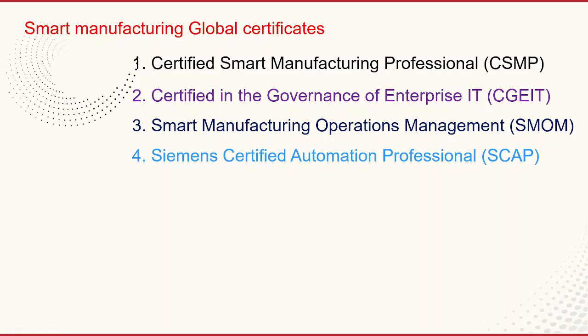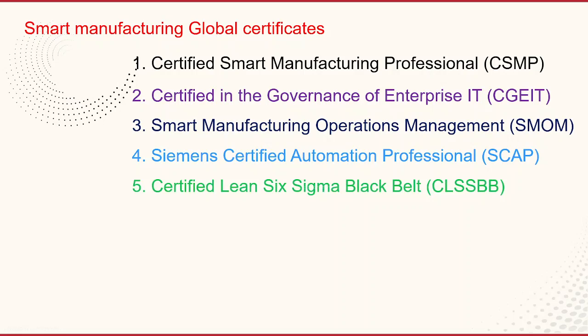The fourth certificate is the Certified Automation Professional (CAP), offered by SIEMENS, which covers the use of automation products in a manufacturing environment, including control systems, human-machine interface (HMI) design, and networking. The fifth certificate is the Certified Lean Six Sigma Black Belt (CLSSBB), offered by the American Society for Quality (ASQ), which covers the use of Lean and Six Sigma methodologies in a manufacturing environment, including process improvement, data analysis, and project management.